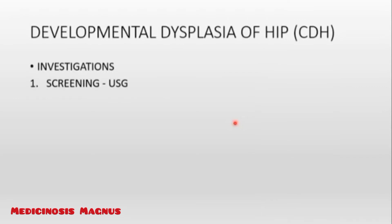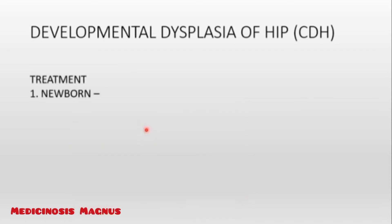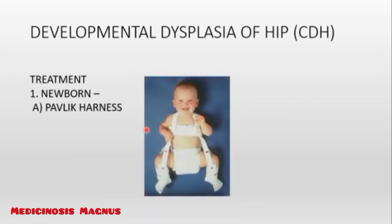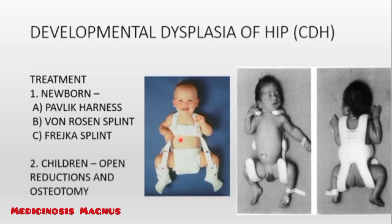For investigations, ultrasound is best for screening as it is done in children, and MRI is the investigation of choice. Treatment for newborns is the Pavlik harness — the thighs are kept abducted and far apart in this position. Alternatives include the Von Rosen splint and Frejka splint. In older children, open reduction and osteotomy are performed because splints won't be very helpful.